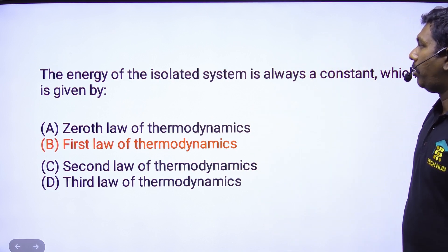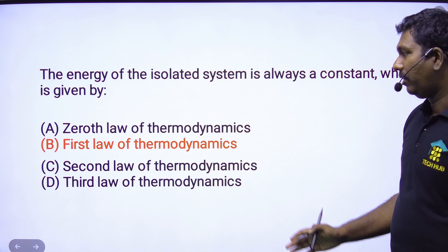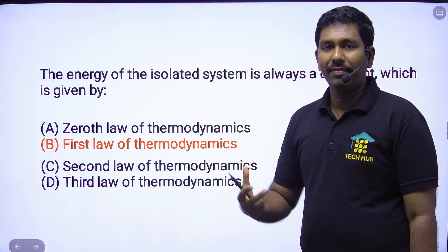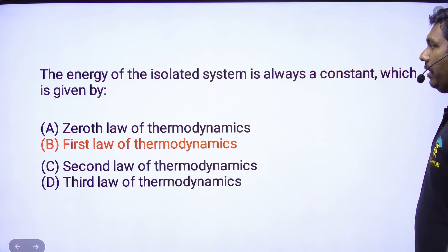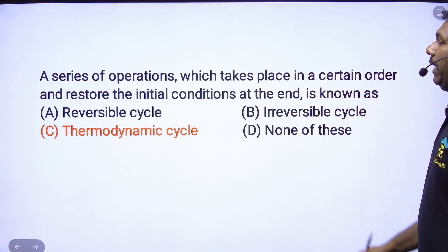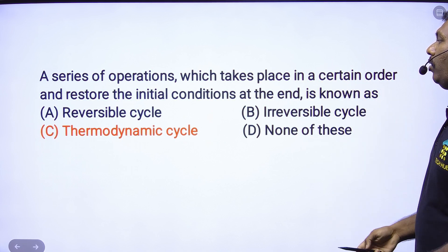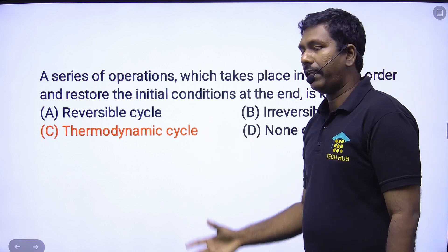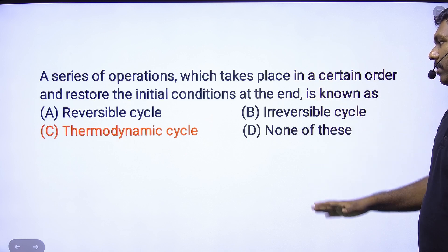The energy of an isolated system is always constant — which is given by the first law of thermodynamics. First law of thermodynamics application — option B is the answer. A series of operations which takes place in a certain order and restores the initial condition at the end is known as a thermodynamic cycle — option C.